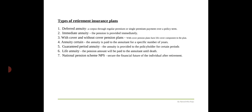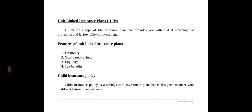The policyholder can withdraw 60 percent of the amount at retirement and the remaining 40 percent is used to purchase an annuity. The maturity proceeds in NPS are not tax-free — they are taxable. The next type of insurance plan is unit linked insurance plans (ULIPs). ULIPs are a type of life insurance plan that provides a dual advantage of protection and flexibility in investment. It is a type of life insurance where the cash value of the policy varies according to current market values. The premium paid is used to purchase units in investments chosen by the policyholder.